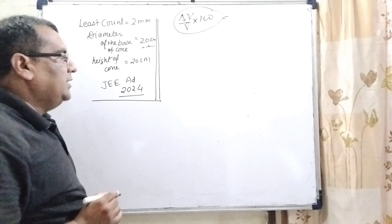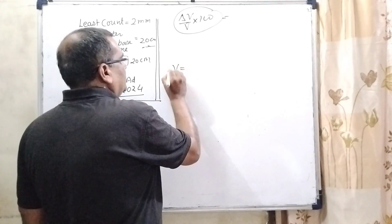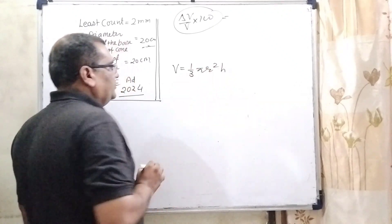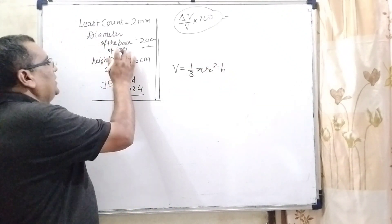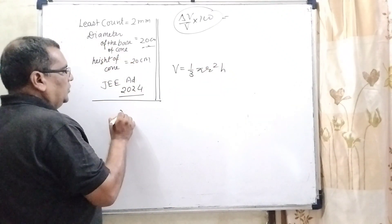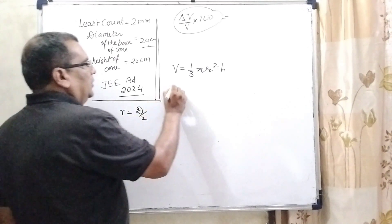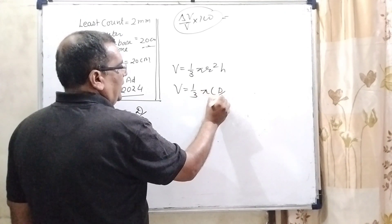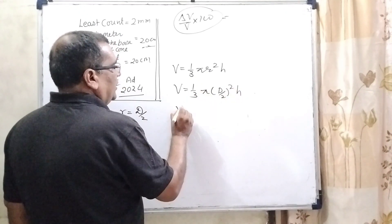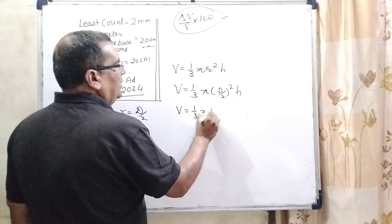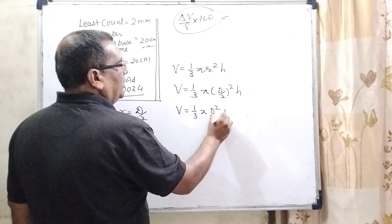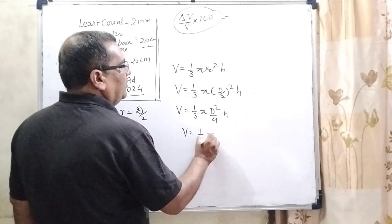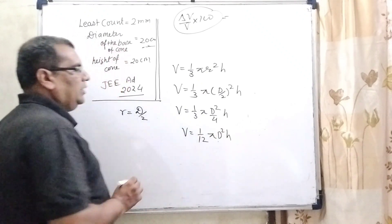This is our key point. As we know that the volume of cone, that is 1 by 3 pi r square h. Here, given is diameter, so radius equals d by 2. Now substitute this value: 1 by 3 pi d by 2 square h. Then V equals 1 by 3 pi d square by 4 into h. V equals 1 by 12 pi d square h.